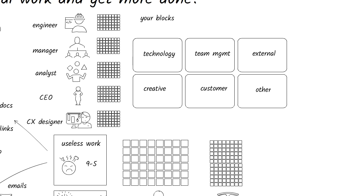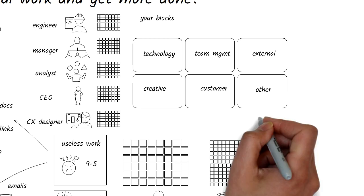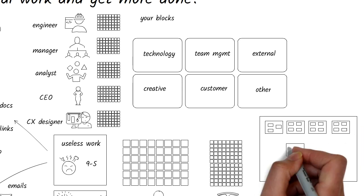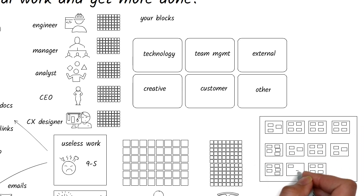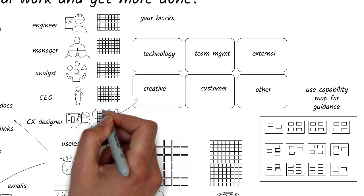Examples of these topics are technology work, team management, external interactions, creative work, self-improvement, accounting and finance, customer engagement, etc. Add one more topic to capture miscellaneous work that you might have to do. If you have the capability map of your organization, then you can use that to identify priority topics.